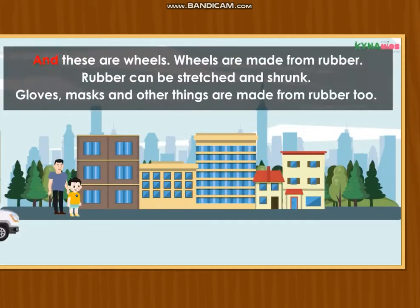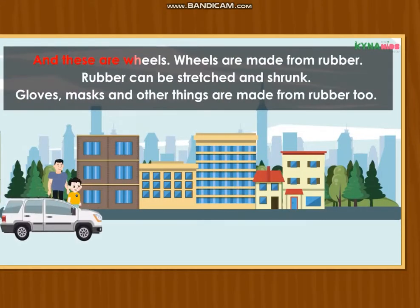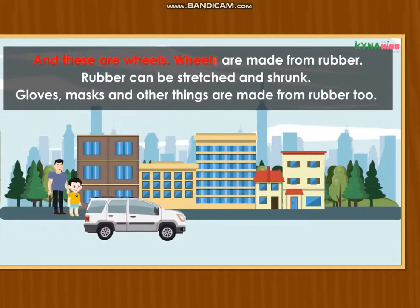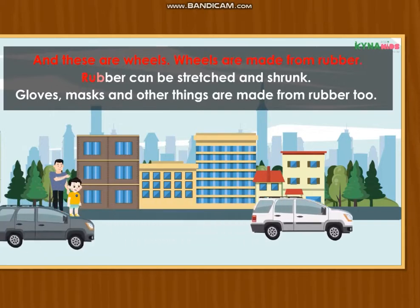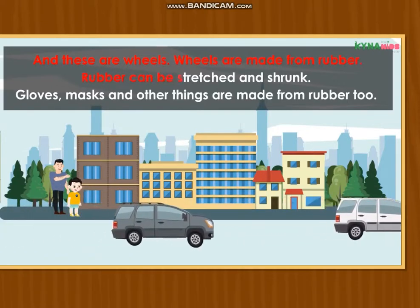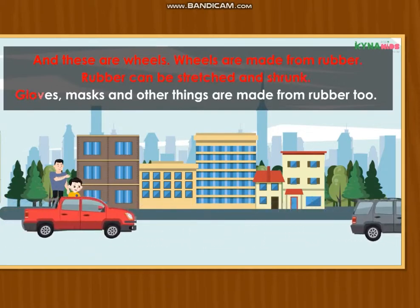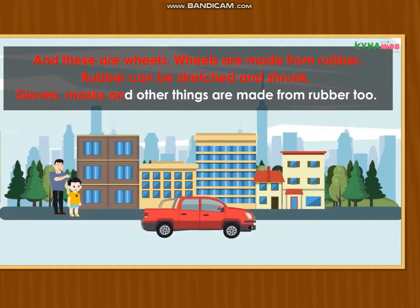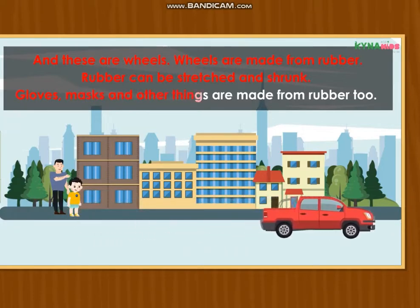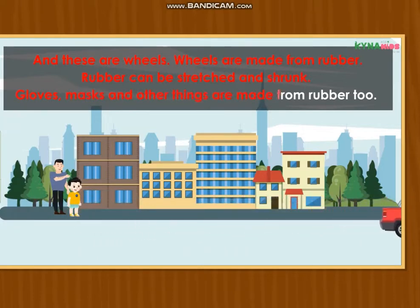And these are wheels. Wheels are made from rubber. Rubber can be stretched and shrinked. Gloves, masks and other things are made from rubber too.